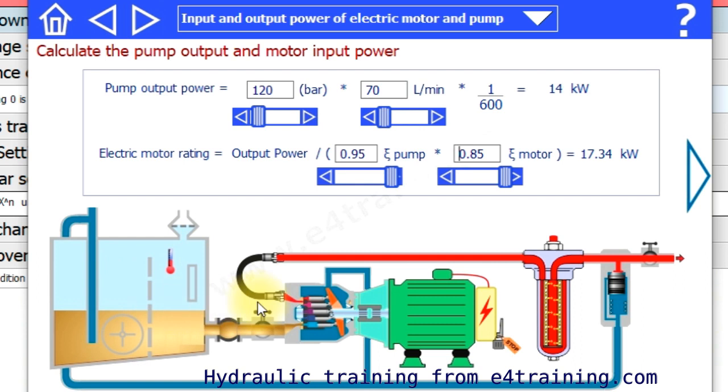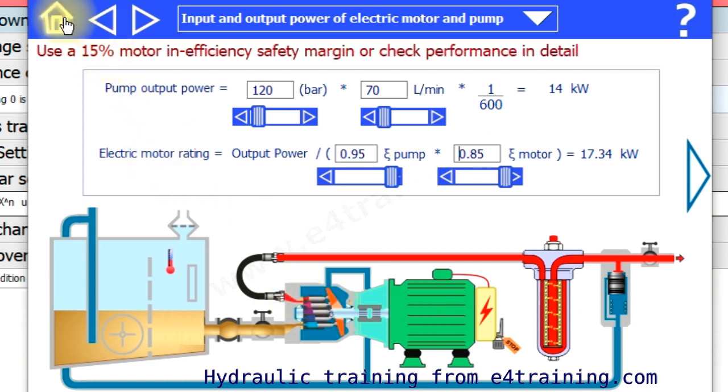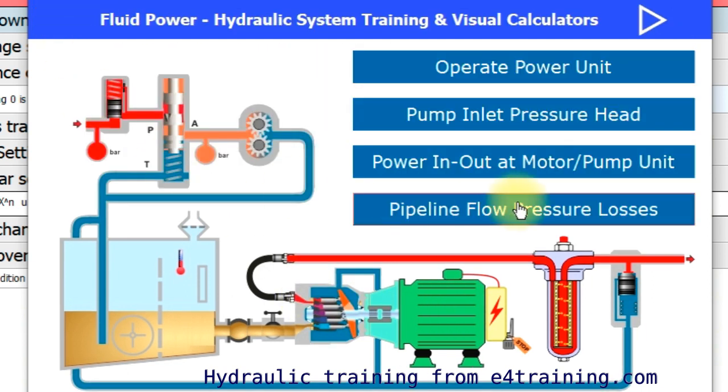We've got the power loss or efficiency of the system, so the power you're putting in and out from your electric motors. You can calculate there for sizing equipment.